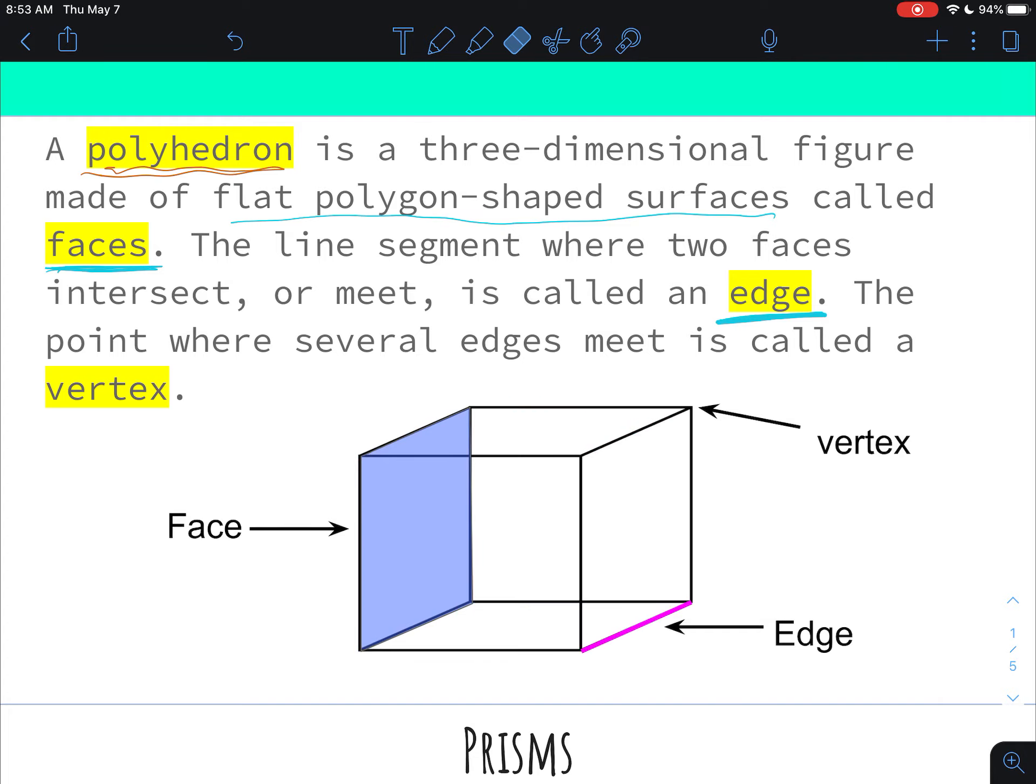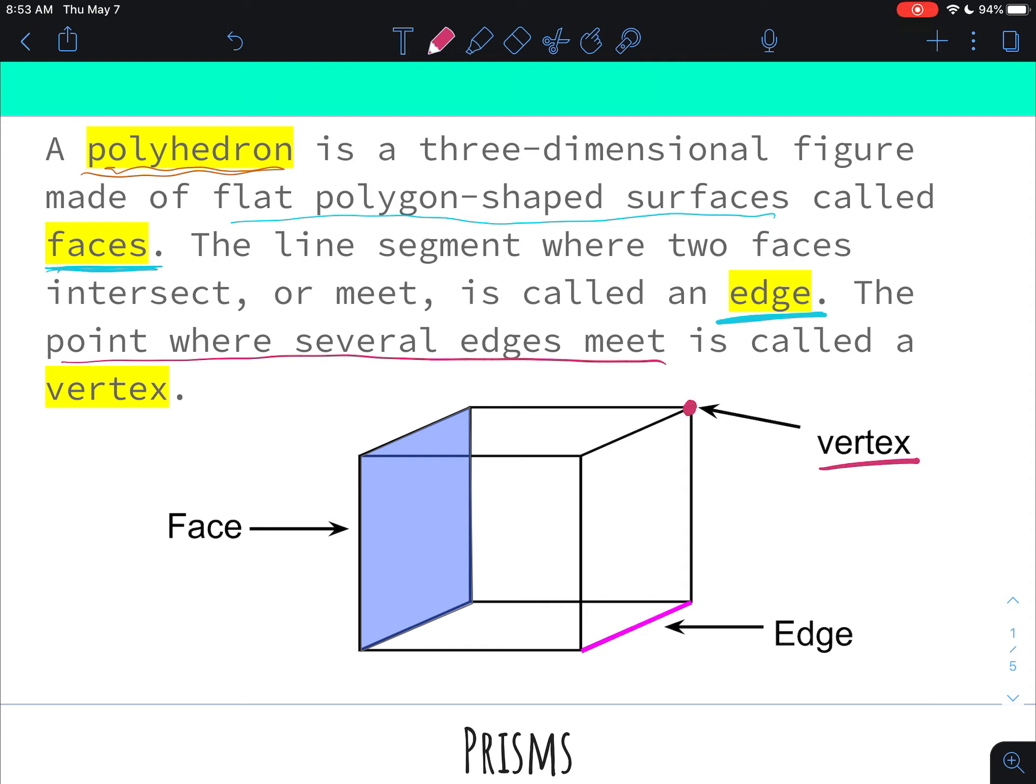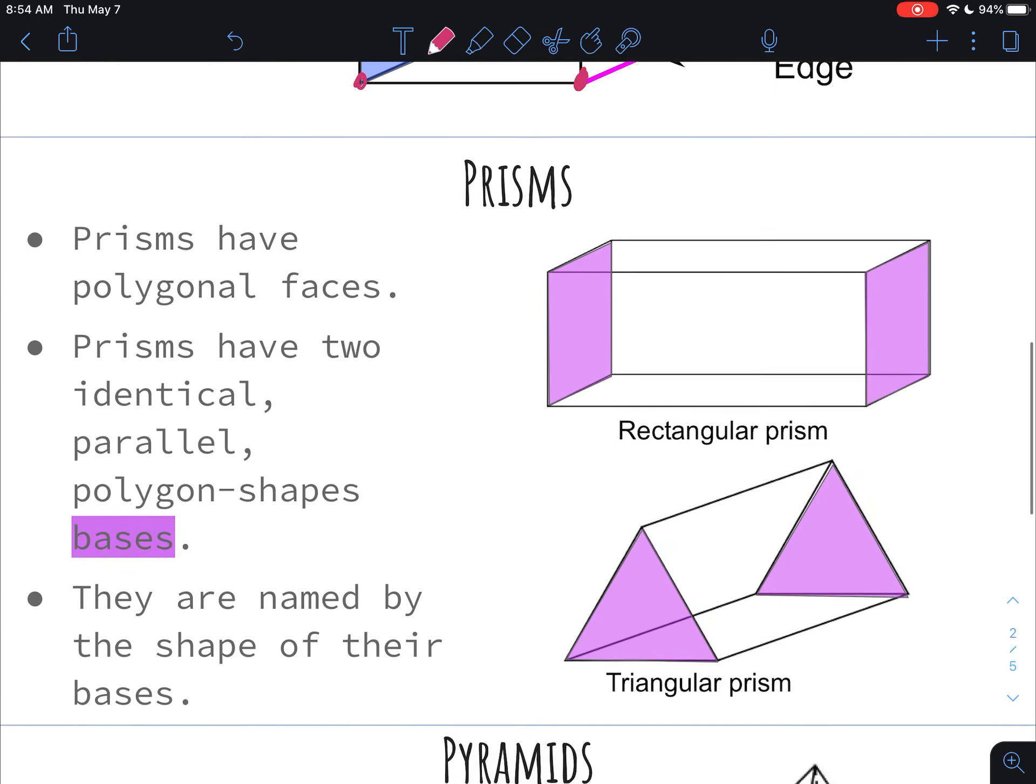And then the last thing you need to identify about polyhedrons are the vertex, or the vertices. Vertices is if you have multiple of them, which cubes have multiple vertices. But a vertex is just the point where several edges meet, so it's literally just like the points or the corners. So cubes have one, two, three, four, five, six, seven, eight vertices. So I kind of just gave you some answers for your graded assignment that you're doing, not really graded assignment, just participation assignment that you're doing after this.